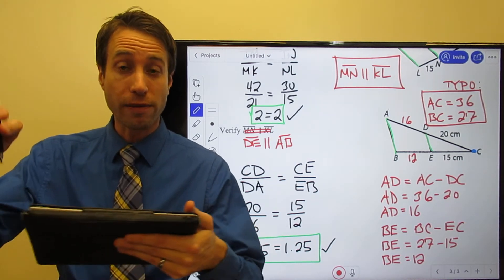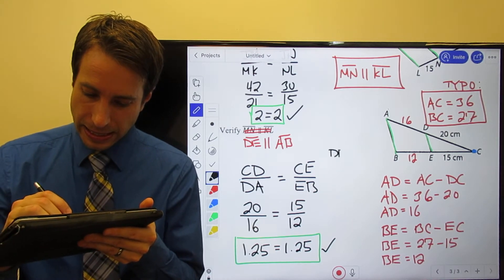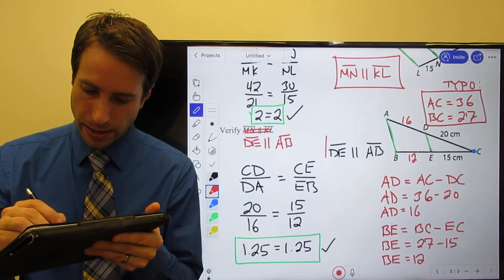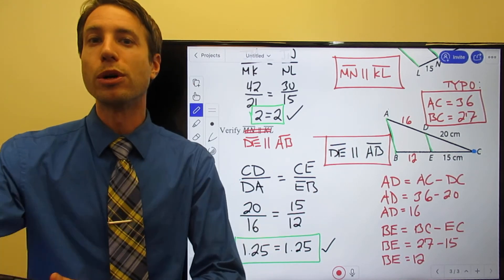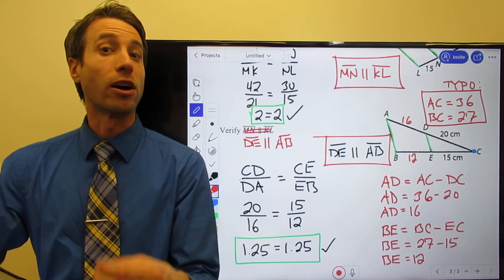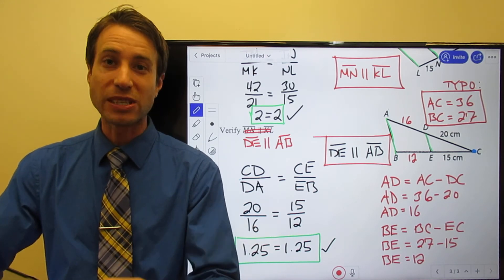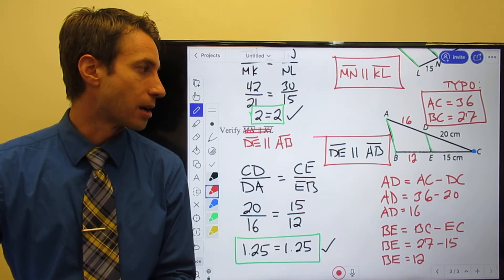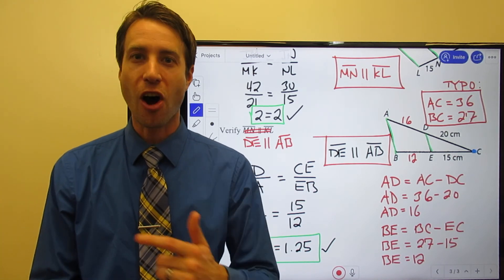And then because of the converse of the triangle proportionality theorem, I know DE is parallel to AB and once again, just like that got verified. So guys, what we're doing here is again, we're taking some of the stuff we learned from a previous chapter, a previous section on similar triangles and writing proportions between those similar triangles and using now those proportions to either help us prove something or solve for some other unknown. I had a great time taking a look at the triangle proportionality theorems with you. I'll see you guys next time.